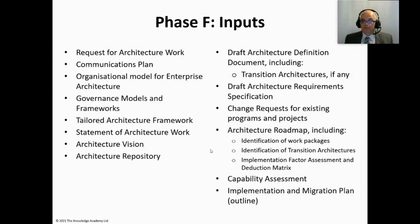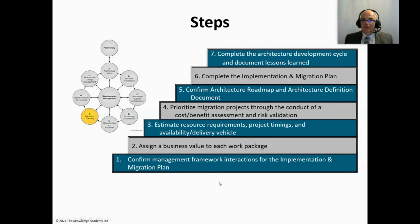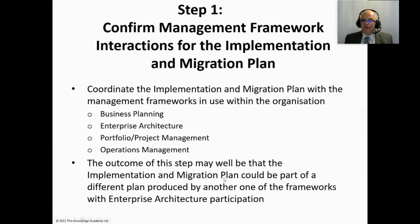There are seven steps that officially make up Phase F. Step one is to confirm the management framework interactions for the implementation and migration plan — coordinating the implementation migration plan with the management frameworks in use within the organization. This is very much an activity done in conjunction with Phase E, given that in Phase E we create an initial version of the plan and finalize it here. The whole idea is that Phases E and F would typically be done together as a single phase.